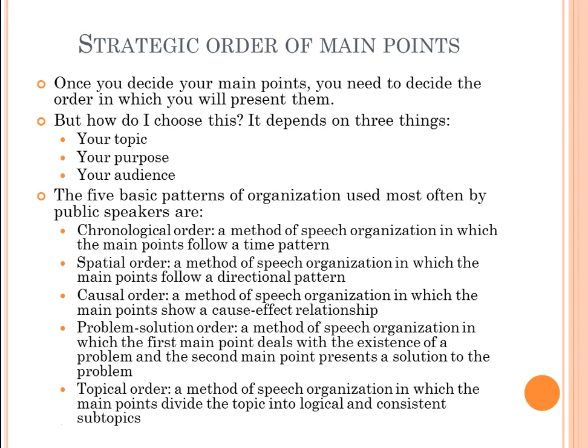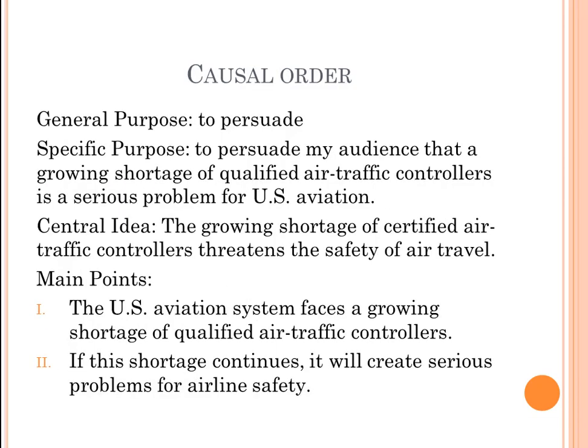Causal order is a method in which the main points show a cause-and-effect relationship. Example: general purpose, to persuade; specific purpose, to persuade the audience that a growing shortage of qualified air traffic controllers is a serious problem for U.S. aviation; central idea, the growing shortage of certified air traffic controllers threatens the safety of air travel. The two main points are: the U.S. aviation system faces a growing shortage of qualified air traffic controllers — that's the cause — and if this shortage continues, it will create serious problems for airline safety — that's the effect.